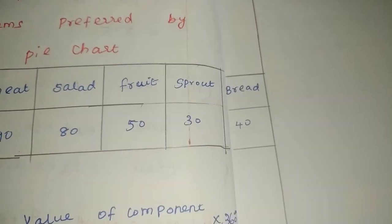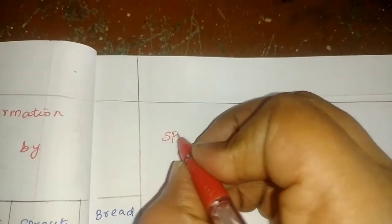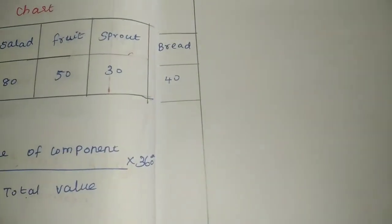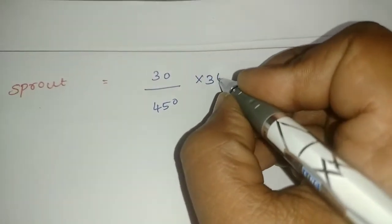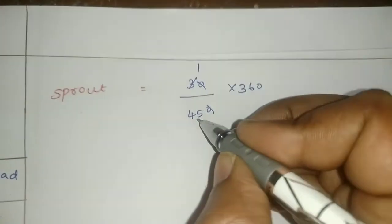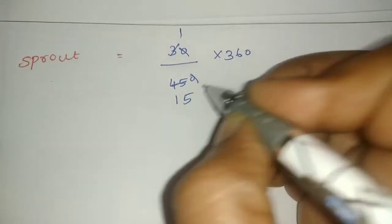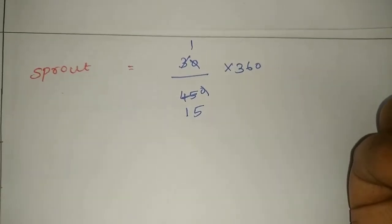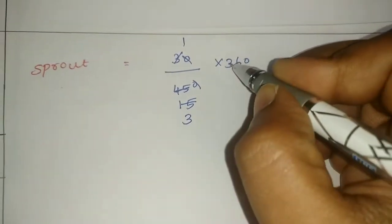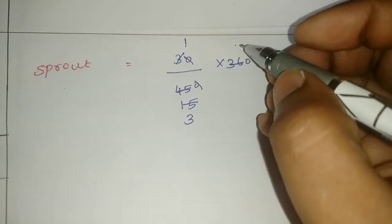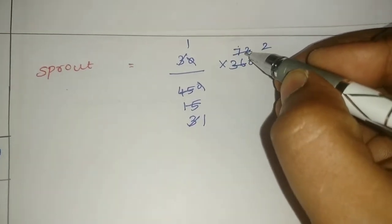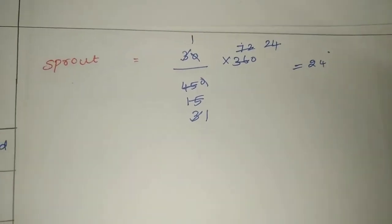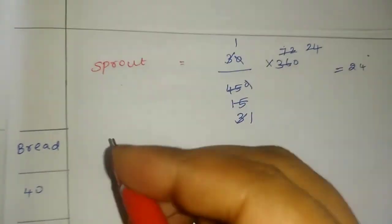Next is Sprouts. For Sprouts, the value of the component is 30, total value is 450, and the formula uses 360. After calculating: the degree for Sprouts is 24 degrees.